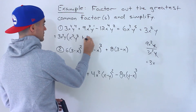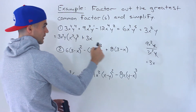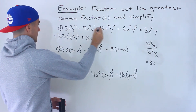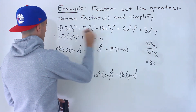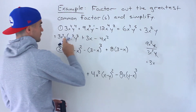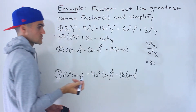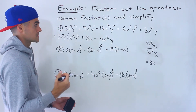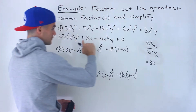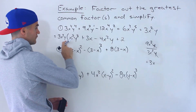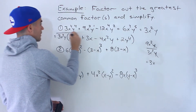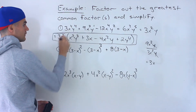So that gives us plus 3x. Continuing that pattern with the third term — notice there's a negative — 12 divided by 3 is 4, x⁴ divided by x² gives x², and y² divided by y¹ leaves y¹. For the last term: 6 divided by 3 is 2, x² divided by x² cancels, and y⁵ divided by y¹ gives y⁴. So the factored expression is 3x²y times (x²y³ + 3x − 4x²y + 2y⁴), and with the remaining expression in the brackets, we can't factor anything else out.